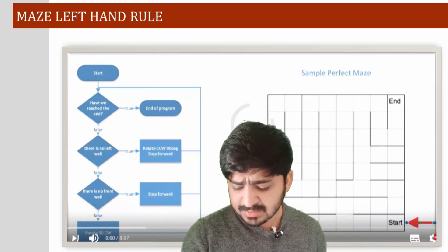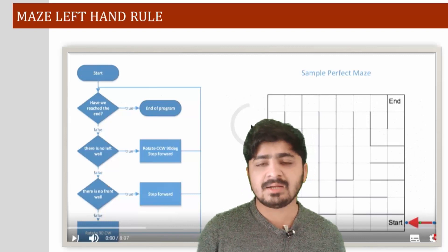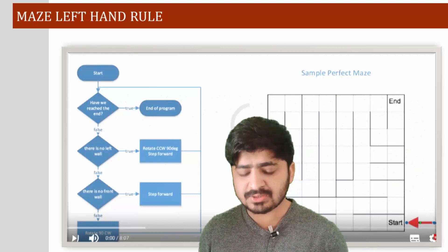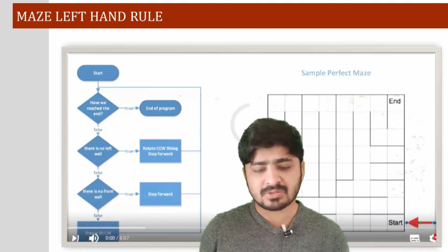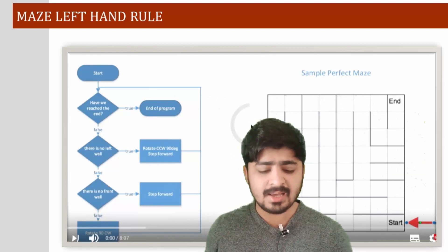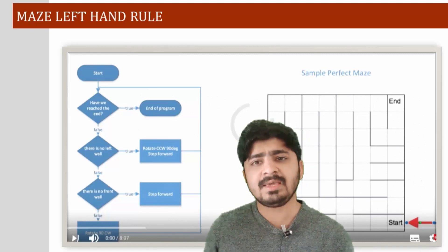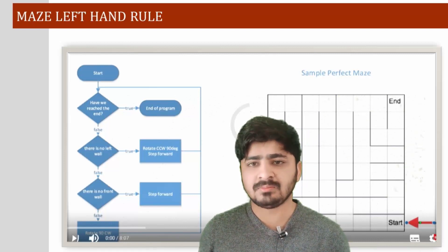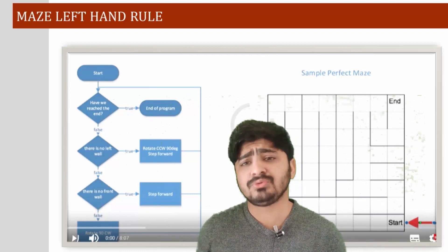Let's study this flow chart in detail. Our robot is at the start point, and what it is going to analyze now is: have we reached the end? If we reach the end, then stop. You have reached your endpoint or goal. If it is false, then check: is there a left wall?